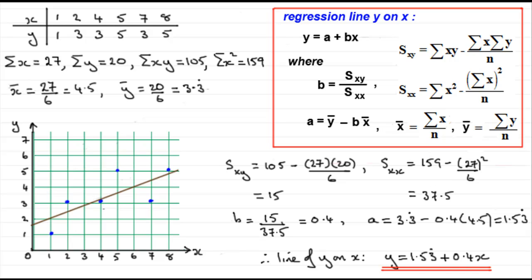It's worthwhile pointing out, by the way, that when we have got regression lines of y on x, this variable x is often termed the independent or explanatory variable. And this variable y here is often called the dependent or response variable. Well worth learning those as well.